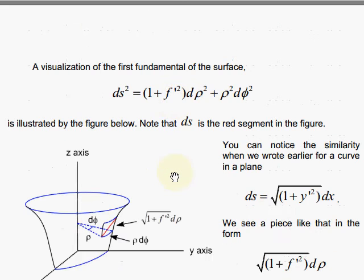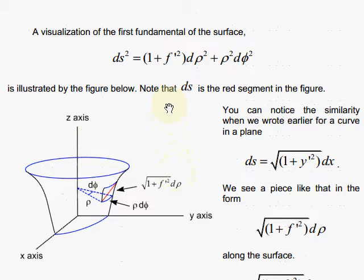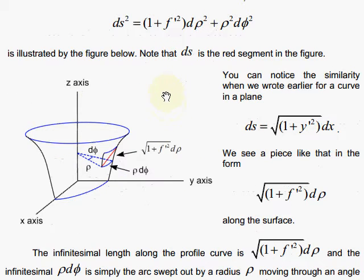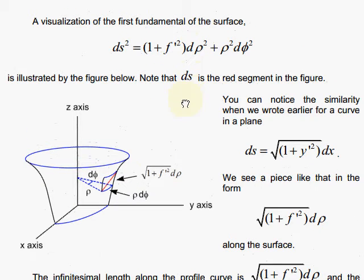So this is sometimes called the first fundamental form of the surface. And there's a nice, beautiful visualization that you can see here, where you look at the ds², which is the arc length here. It's a little red hypotenuse squared.